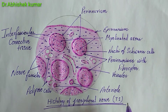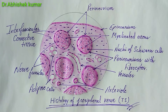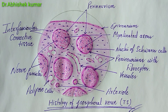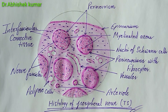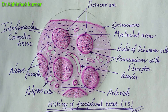A quick revision — how to identify the histology of peripheral nerve. First is the epineurium. Then the round structure is the perineurium. Inside the perineurium, the myelinated axons are present, along with the nuclei of Schwann cells. In the perineurium, fibrocyte cells are present. Other than that, venules, arterioles, and adipose cells are present in the interfascicular connective tissue. And all the axons together are called nerve fascicles.